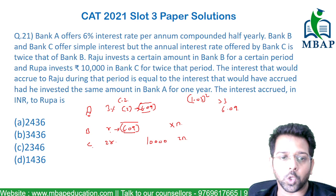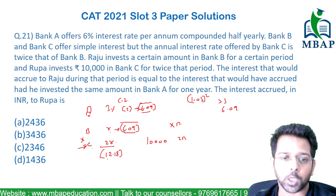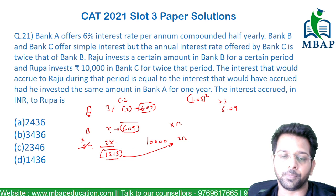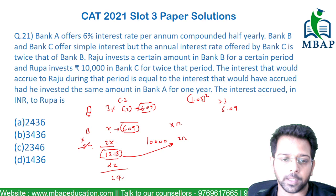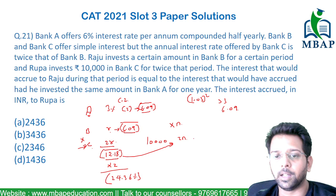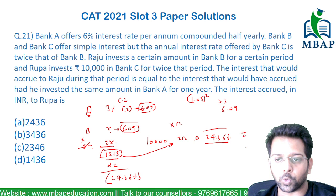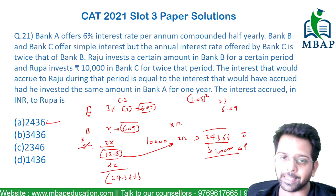Now C is getting twice the rate of what B is getting. So 2R becomes 12.18%. But C is investing for twice the number of years, so the total interest is double of 12.18%, which is 24.36%. You know the interest rate and the principal amount, which is 10,000. So 10,000 at 24.36% gives a straightforward answer of 2436 as the final value.